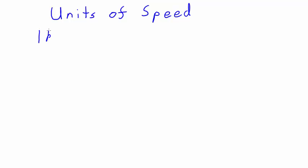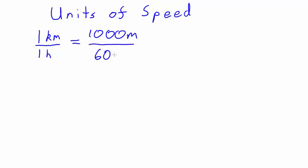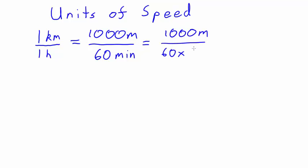So if you're moving at one kilometre per hour, then that means you move one kilometre in one hour. But that's the same as saying that you move 1,000 metres in 60 minutes. Each minute is 60 seconds, so that's 60 times 60 seconds. So this is equal to 1 over 3.6 metres per second.